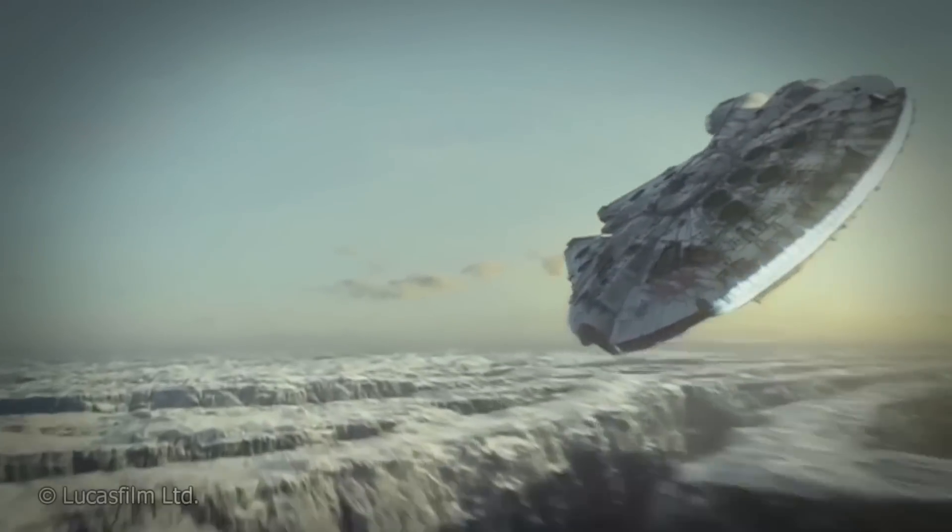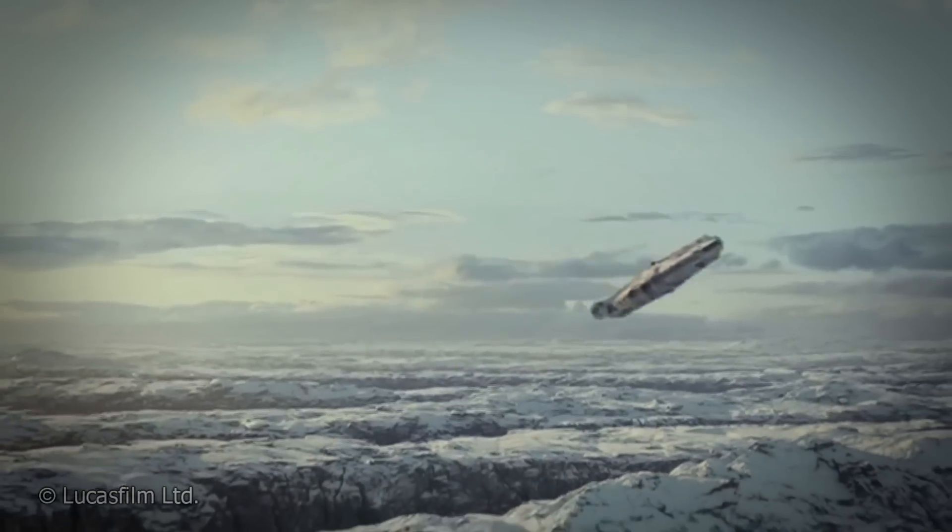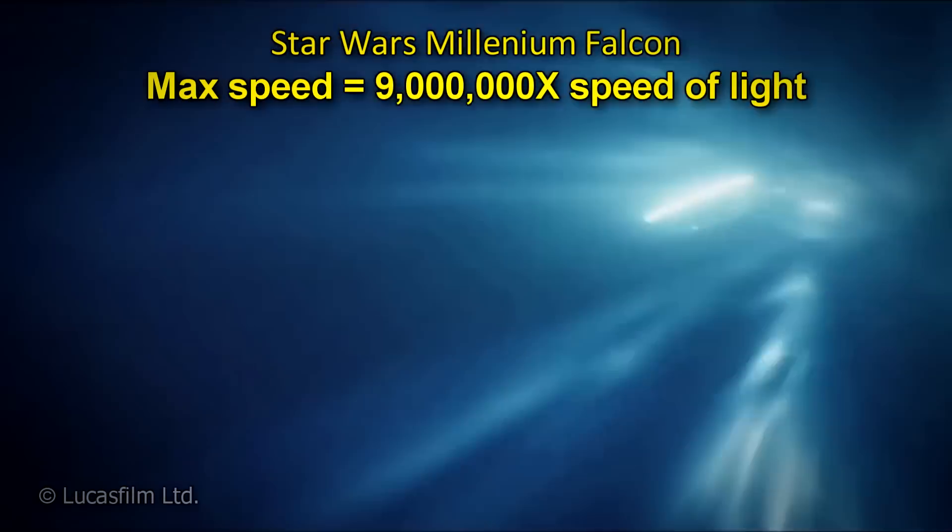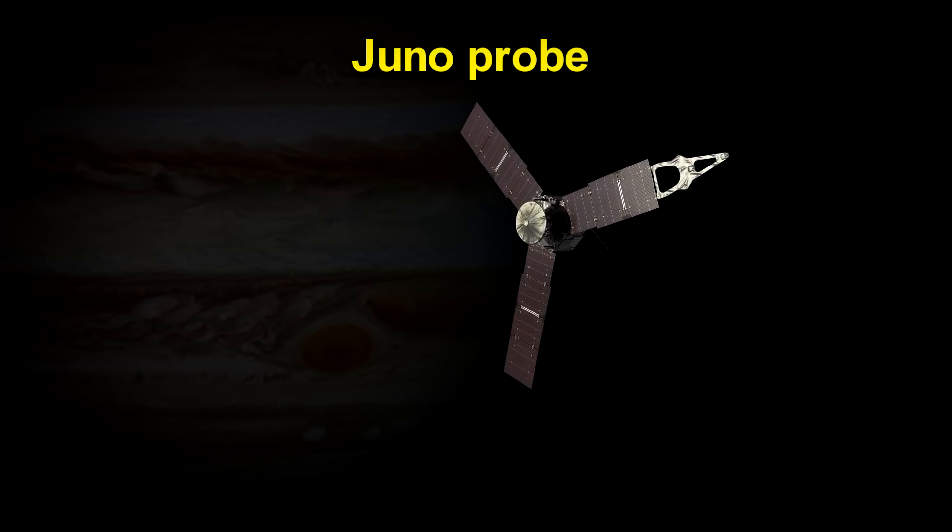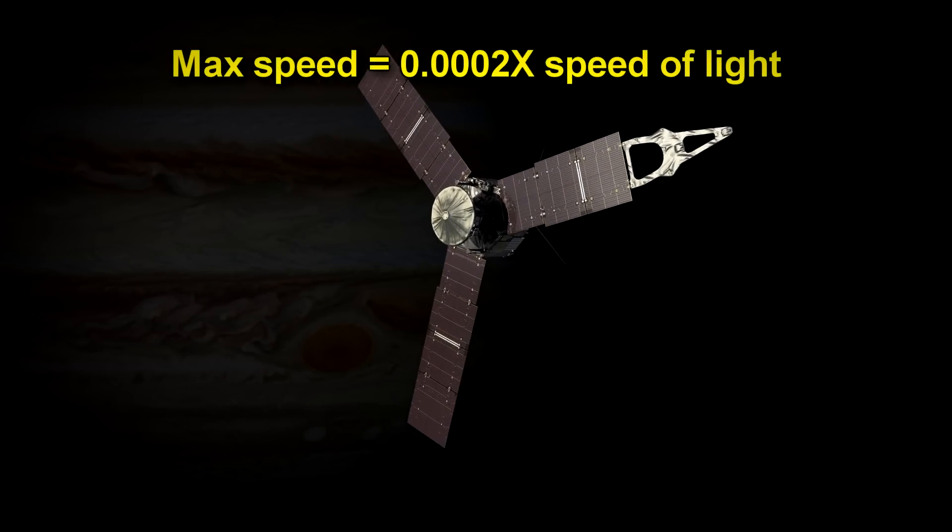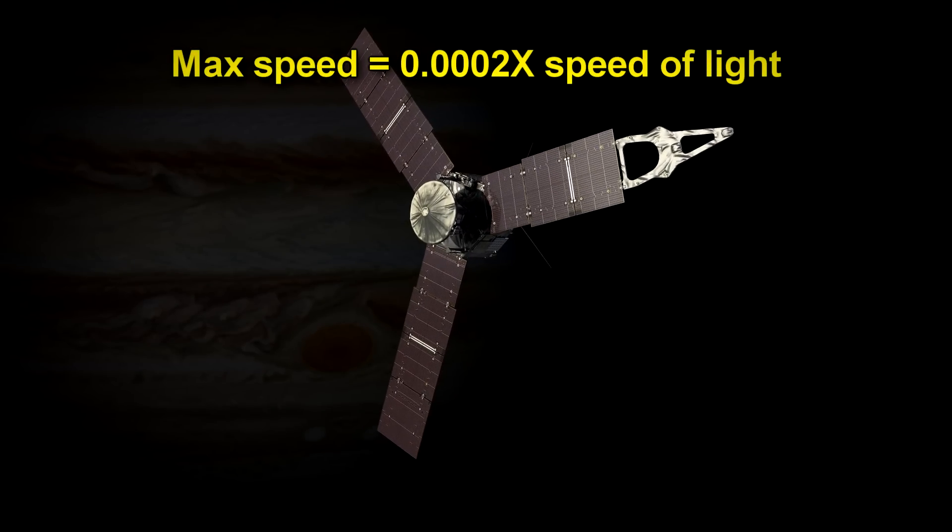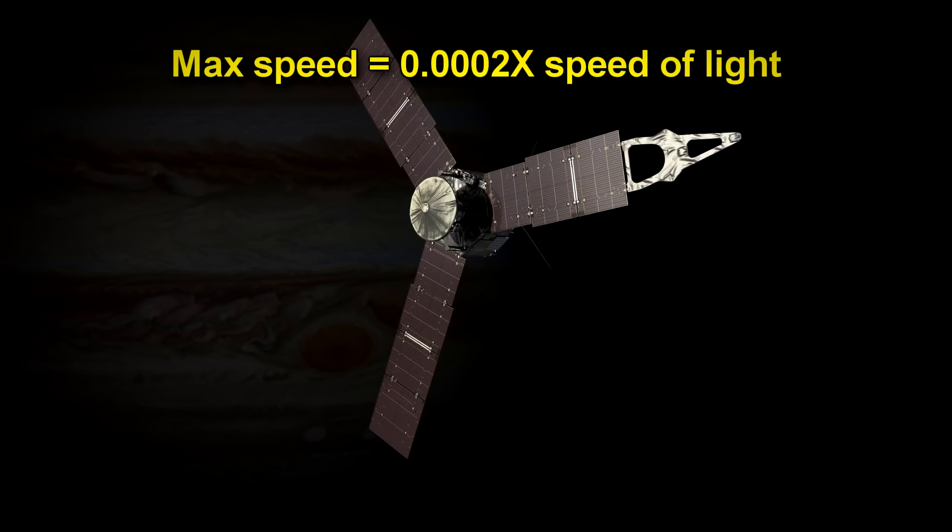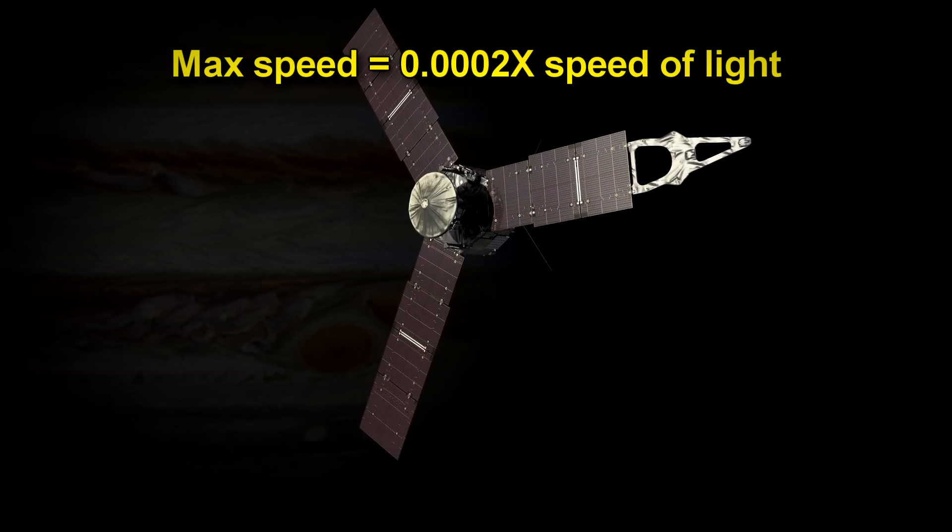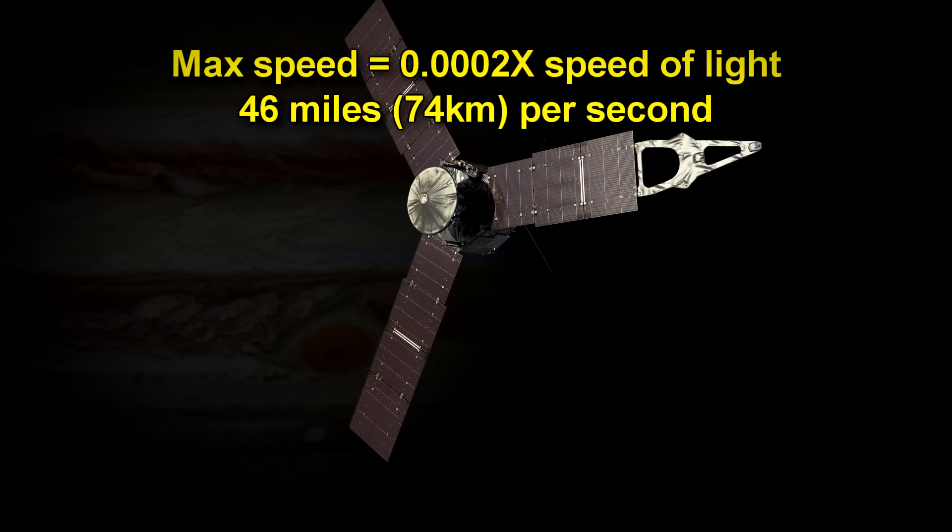And if you think that's fast, the Millennium Falcon from Star Wars can go 9 million times the speed of light. By comparison, the fastest man-made object, the Juno probe around Jupiter, goes a whopping 0.0002 times the speed of light. This is still super fast by earthly standards, 46 miles or 74 kilometers per second.